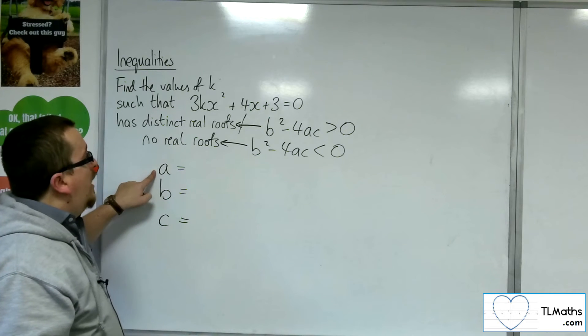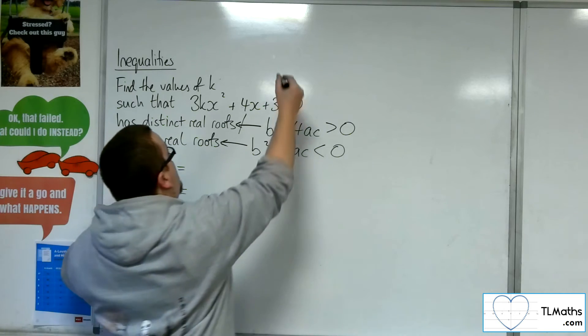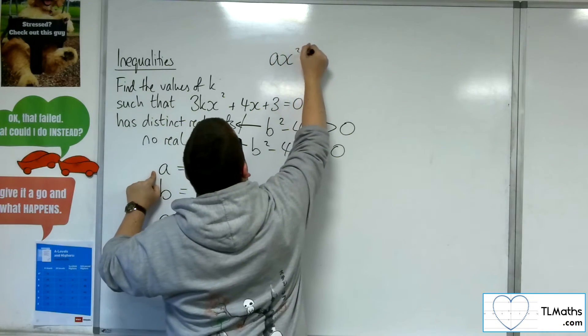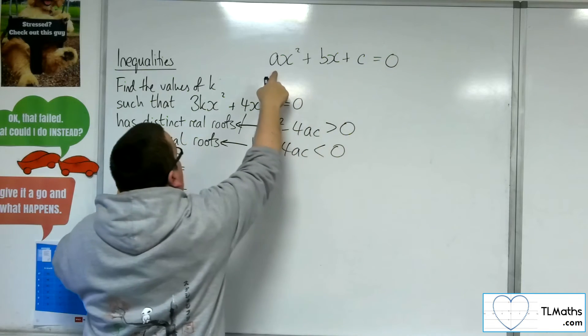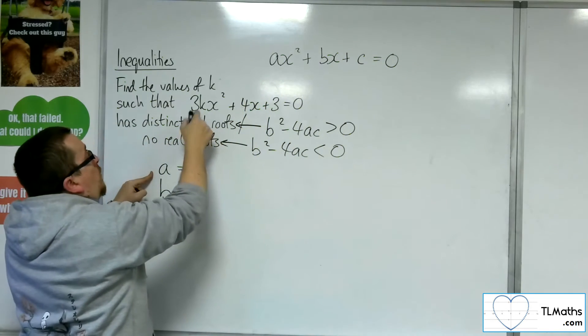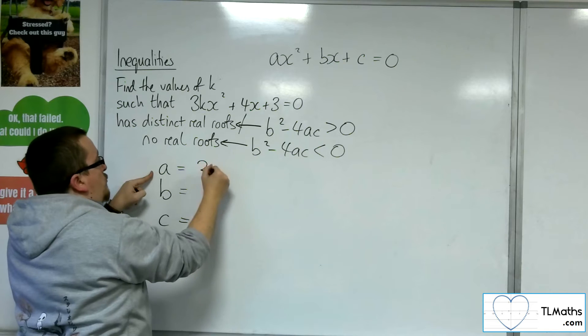Now, a is the coefficient of the x squared. Remember that we're writing this down as ax squared plus bx plus c equals 0. The a is the number in front of the x squared, which in our case is 3k.